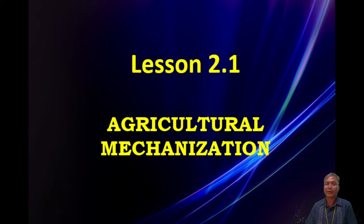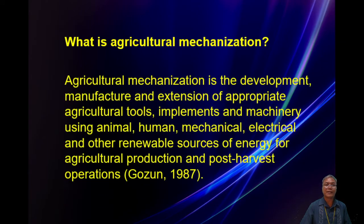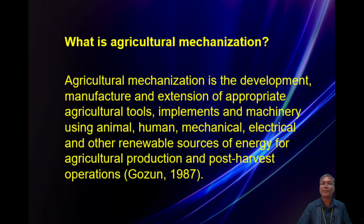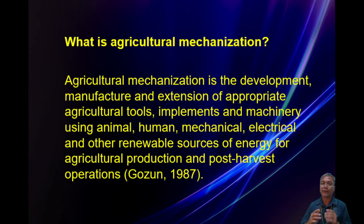So without further ado, we will discuss: what is agricultural mechanization? Agricultural mechanization is the development, manufacture, and extension of appropriate agricultural tools, implements, and machinery using animal, human, mechanical, electrical, and other renewable sources of energy for agricultural production and post-harvest operations.